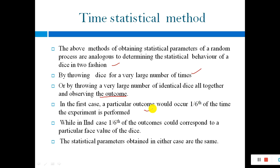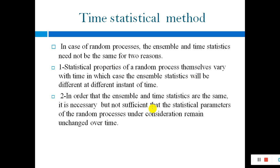In the case of a random process, the ensemble and time statistics need not be the same, for two reasons. First, the statistical properties of a random process may themselves vary with time, in which case the ensemble statistics will be different at different instants of time. Second, for the ensemble and time statistics to be the same, it is necessary but not sufficient that the statistical parameters of the random process remain unchanged over time.